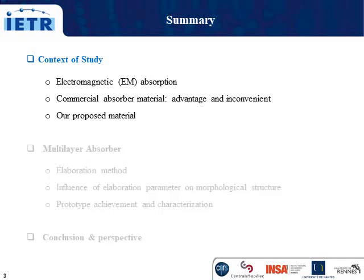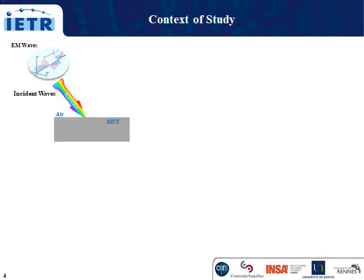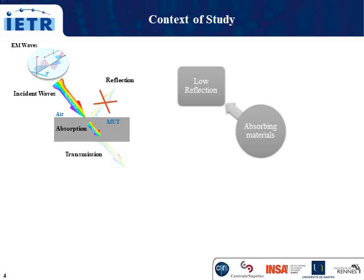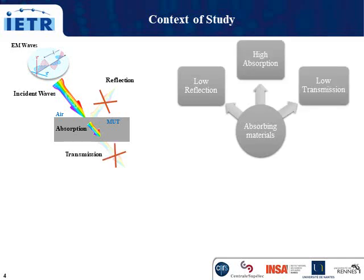Let's start with the context of our study. I start with this simple presentation of the absorption principle. When an incident electromagnetic wave arrives on the surface of a material, a part of this wave is reflected, a part is absorbed, and the last part is transmitted through the material. In the case of absorbing material, we need low reflection, low transmission, and high absorption of the electromagnetic waves.